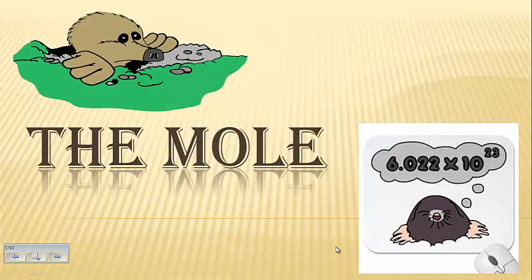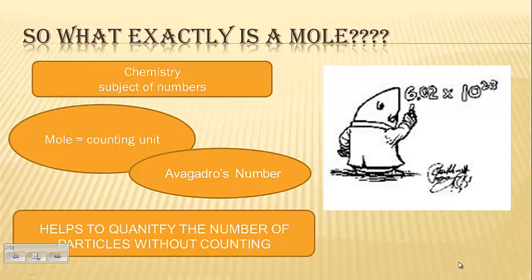So today we are going to be talking about the mole, and I'm not talking about the rodent or the thing that's growing on your arm. I'm talking actually about a counting unit used in chemistry. Chemistry is a subject of numbers, and it deals with particles, which are atoms, molecules, formula units. But these things are so small, we can't individually count each one of them. So we have a counting unit called the mole that Avogadro came up with that allows us to count how many atoms, molecules, and formula units there are in a substance.